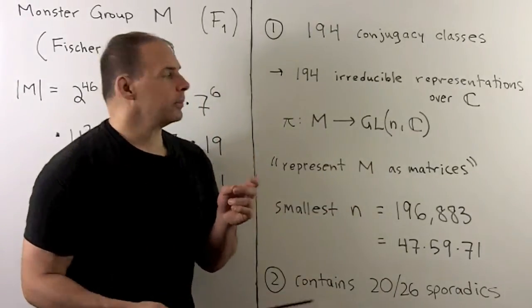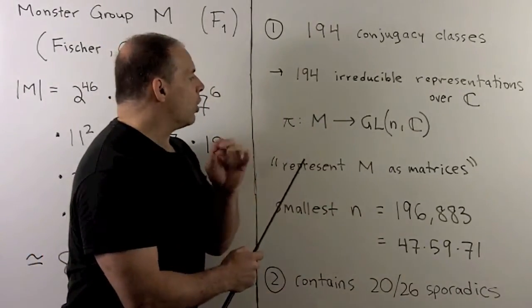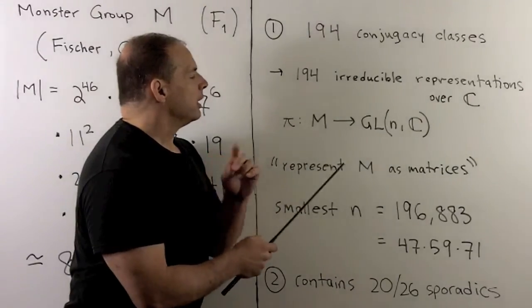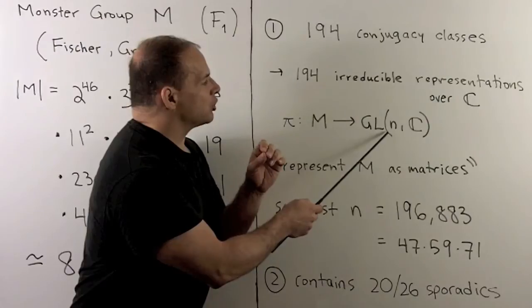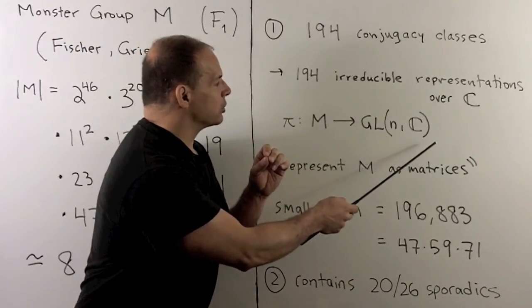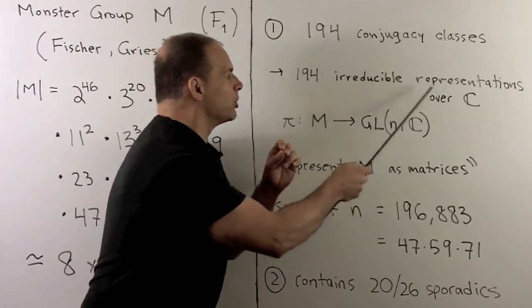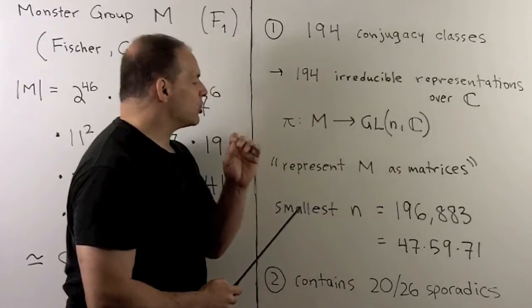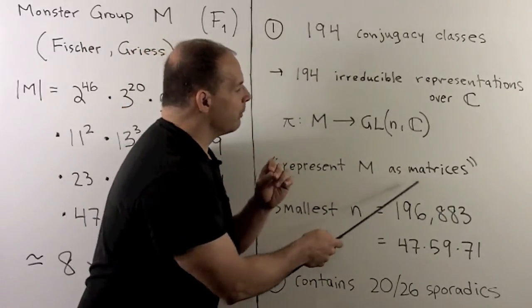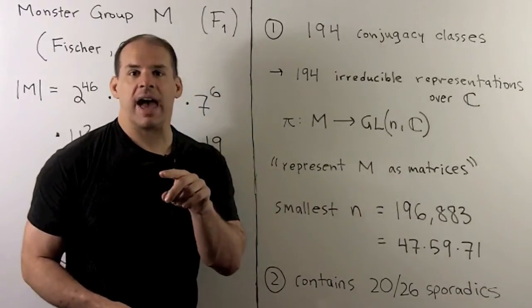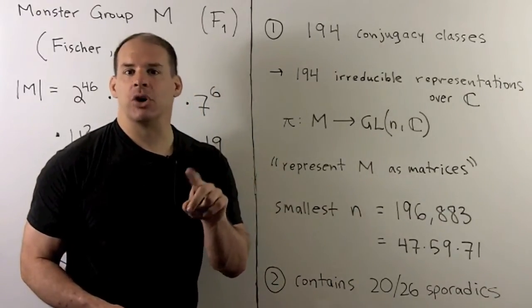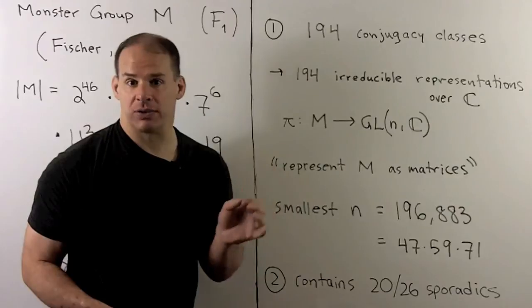Now, what's a representation? Well, formally, it's going to be a homomorphism from a group into the group of invertible n-by-n matrices over the complex numbers. So representation just means we want to represent our group as a group of matrices. Now, another way to say that, we have a group action on a vector space by linear transformations.